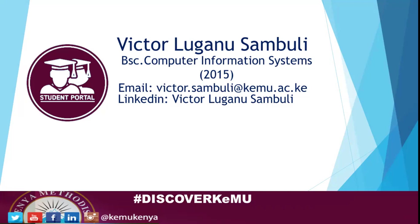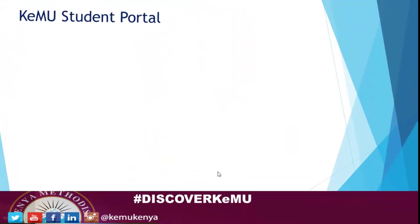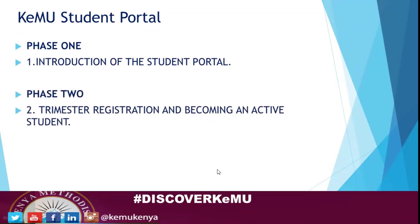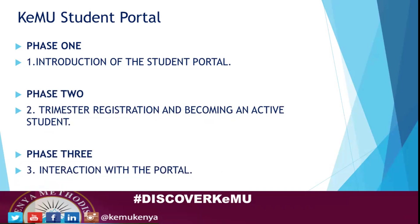A number of things we've done for you between now — September and December — but come January going forward, there are things that will be your sole responsibility as a student. We're going to discuss in three phases: the first phase is the introduction of the student portal; the second phase is trimester registration and becoming an active student; and the last phase is generally interacting in the portal so you can see practically what you're supposed to do as a new student going forward.